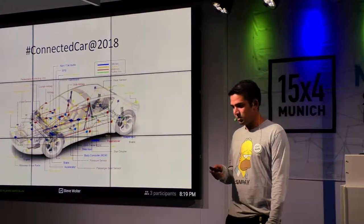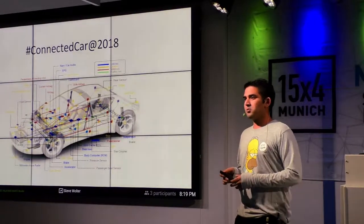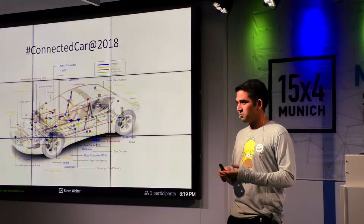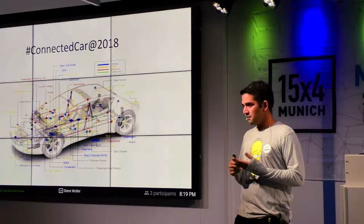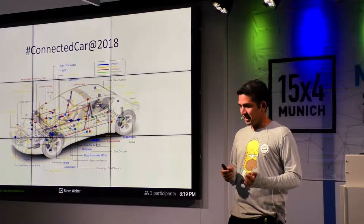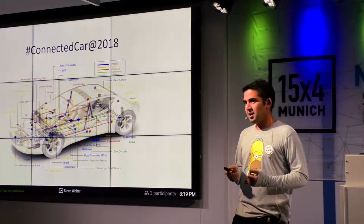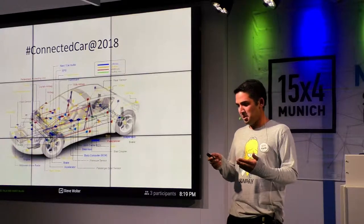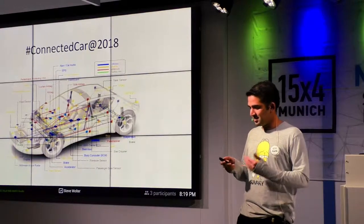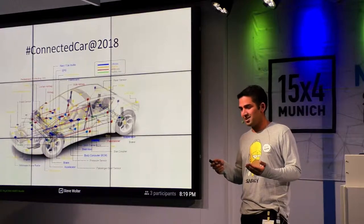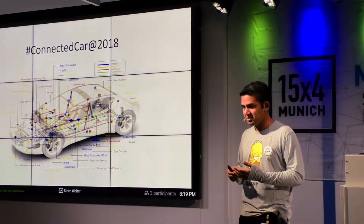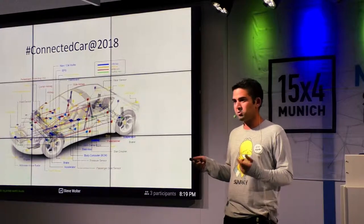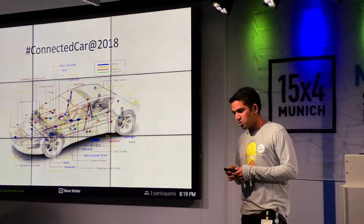The answer would be that computers and digital networks are the best way of doing two things: information transmission and information processing. But that's also kind of a stupid answer because I replaced one set of jargons by another set. So you could ask, why do cars need to do information processing and information transmission, and exactly what do they mean? To go into examples now.